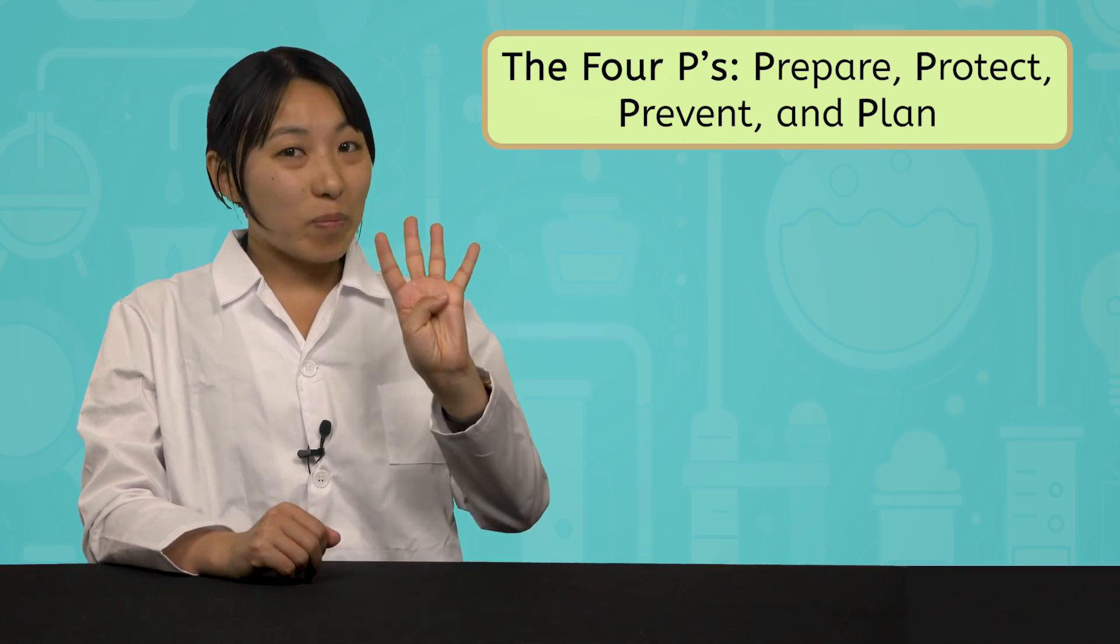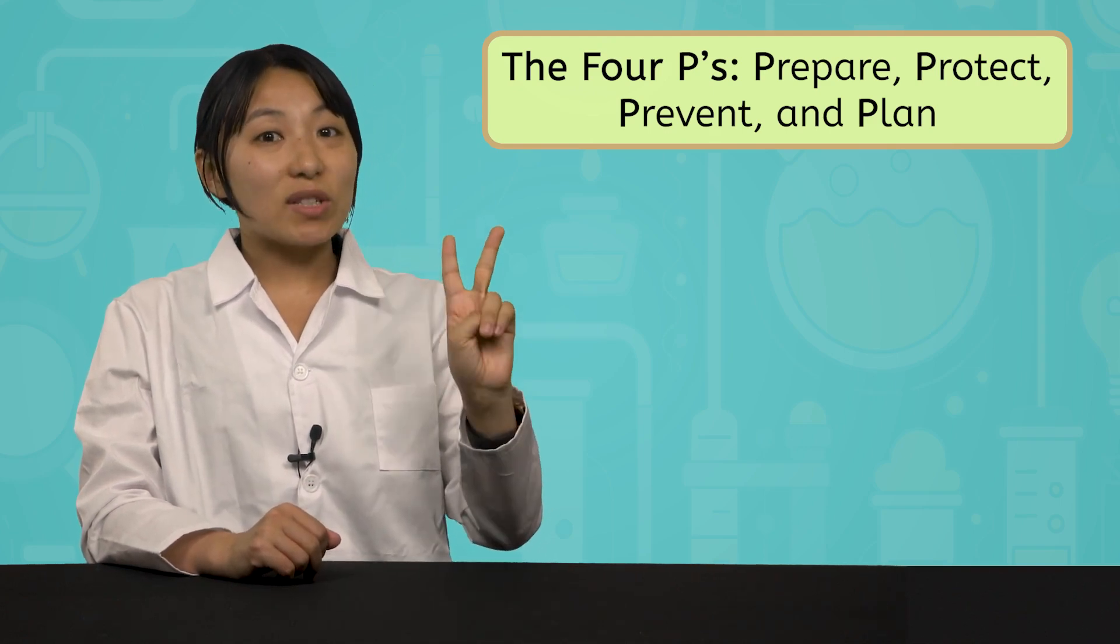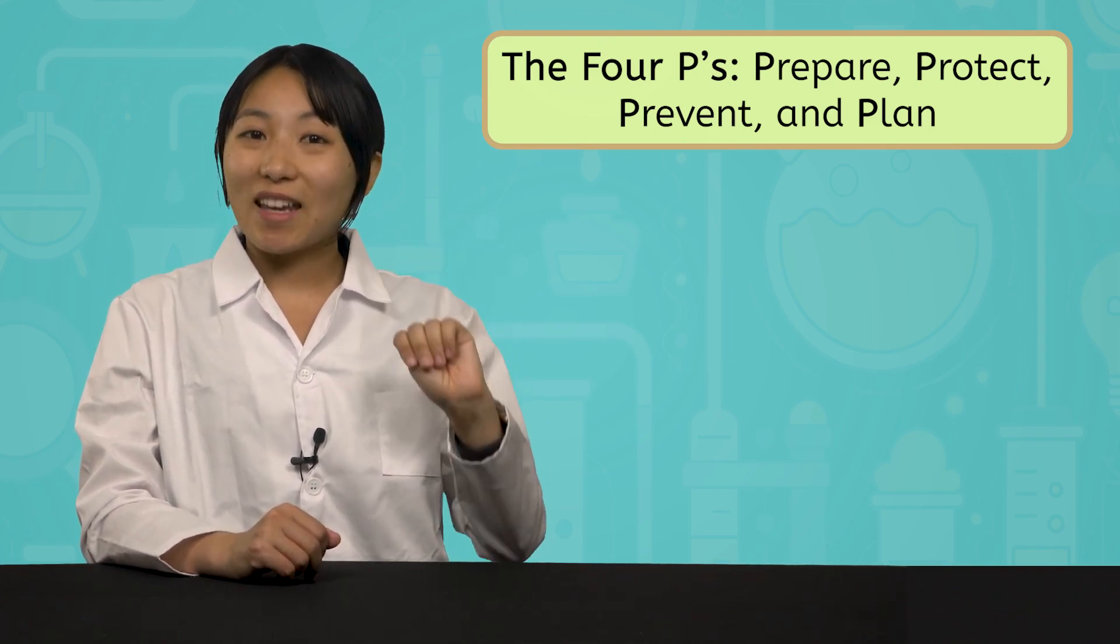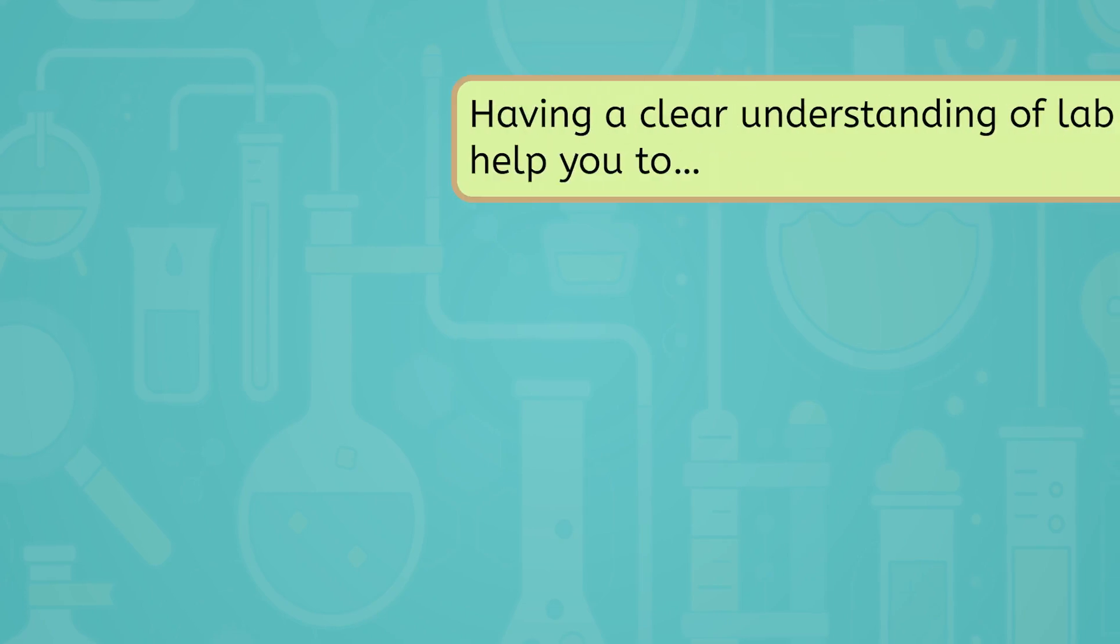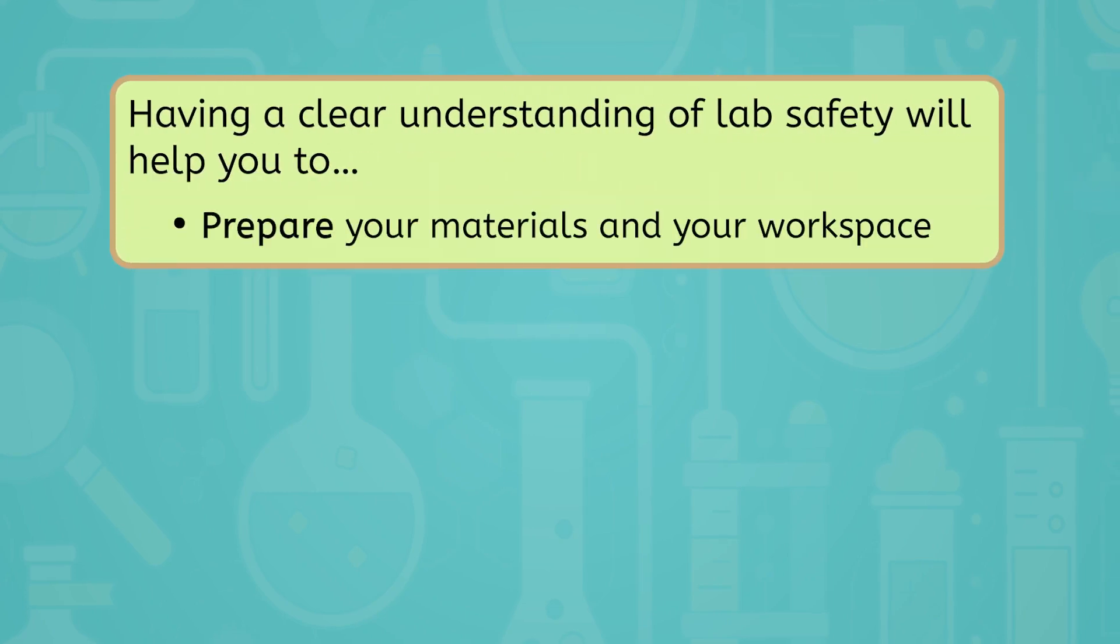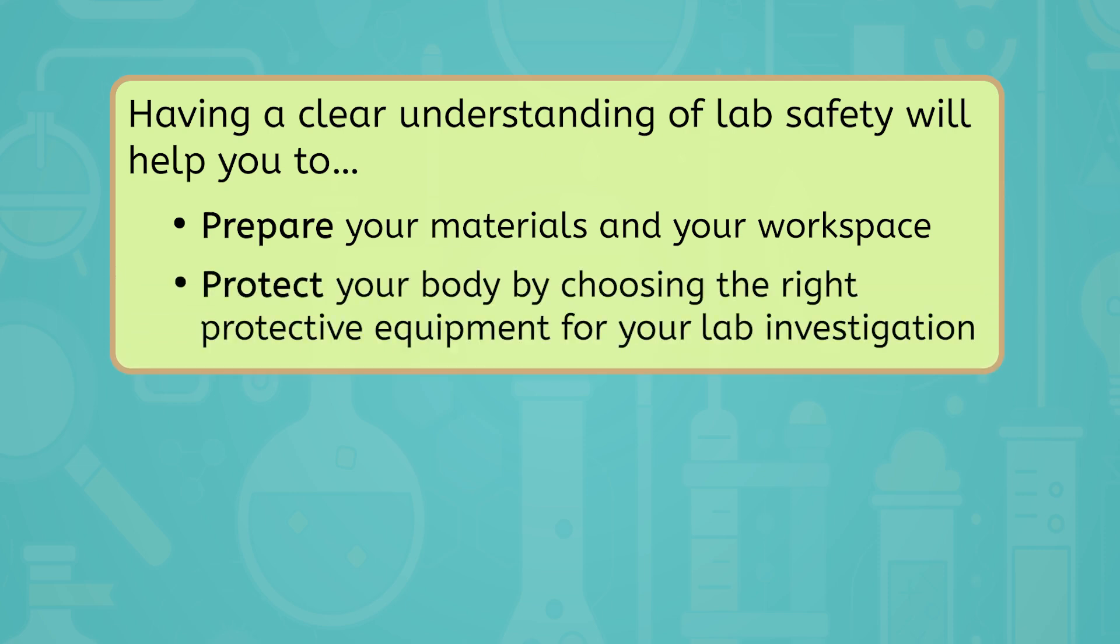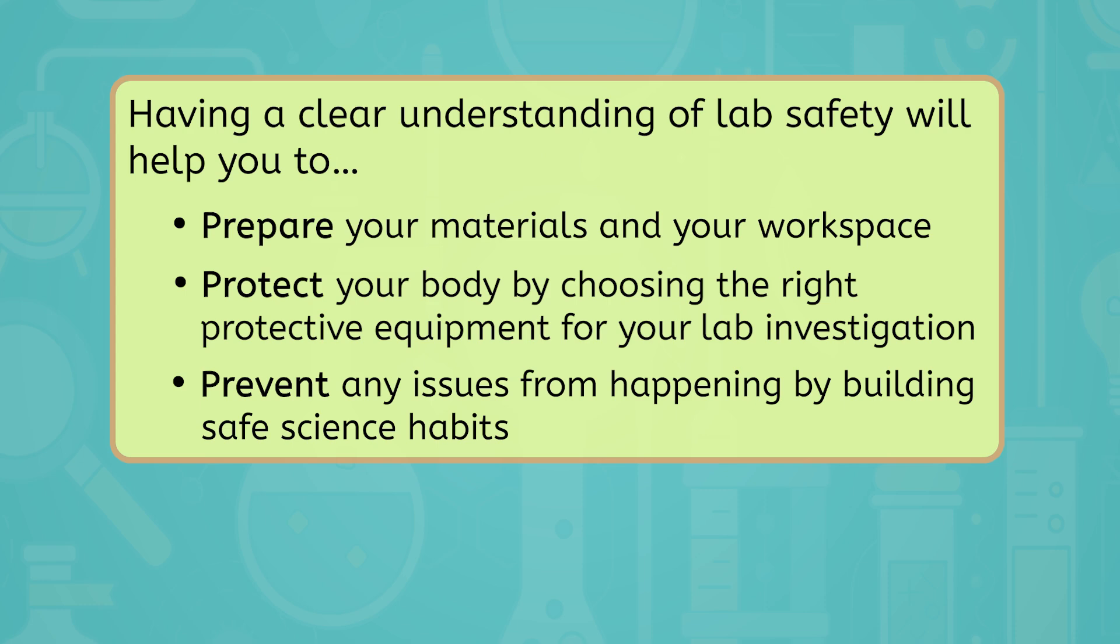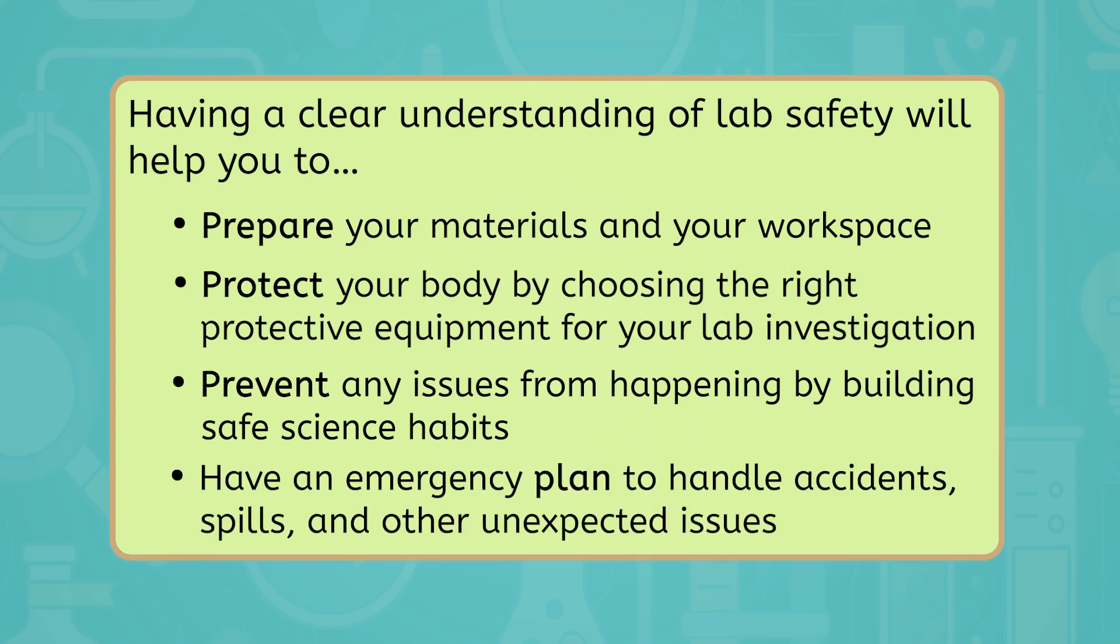You can remember the purpose of lab safety by remembering the four P's. Prepare, Protect, Prevent, and Plan. Having a clear understanding of lab safety will help you to prepare your materials and your workspace, protect your body by choosing the right protective equipment for your lab investigation, prevent any issues from happening by building safe science habits, and finally, have an emergency plan to handle accidents, spills, and other unexpected issues.